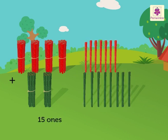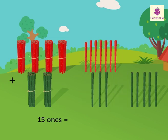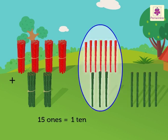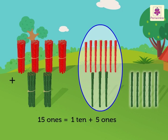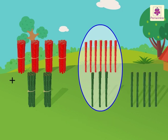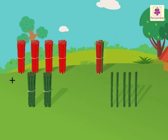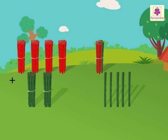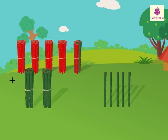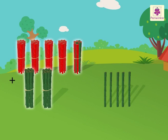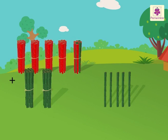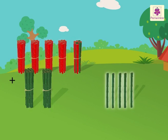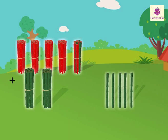Now, fifteen-ones is equal to one-ten and five-ones. So, we regroup it. That is, we take the one-ten bamboo sticks and place it with the other tens. Now, count the ones and the tens. We have seven tens and five ones, which is equal to seventy-five.